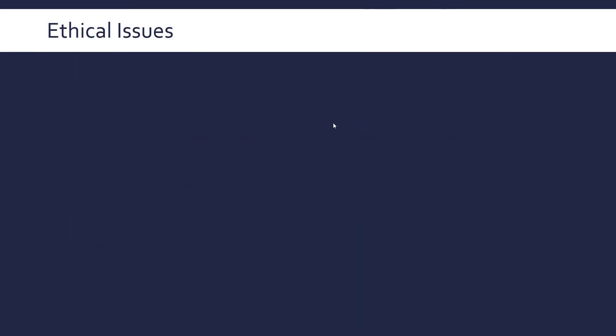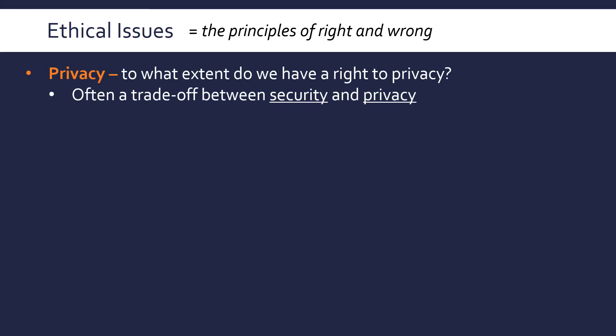Let's start by looking at some ethical issues first, which is all about whether something is right or wrong. Privacy is a great example of an ethical issue — to what extent do we have a right to privacy as citizens? There's often a trade-off between our security and our privacy. The government needs to keep us safe, but that often means looking at personal data in order to detect crime, detect terrorism and so on.